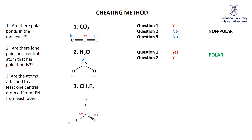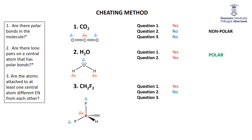Finally, the sneaky one: CH₂F₂. Are there polar bonds? Yes. Are there lone pairs on the central carbon? No. So question three: are the attached atoms — fluorines and hydrogens — of different electronegativities? Yes, they are. Thus CH₂F₂ is polar.